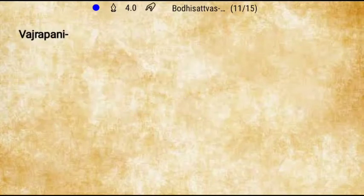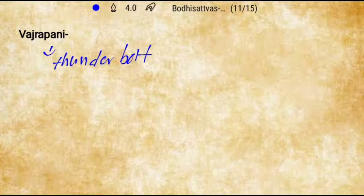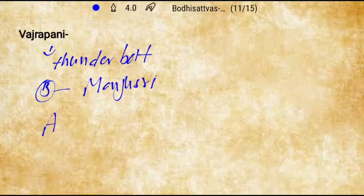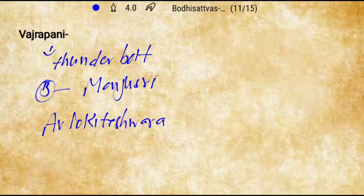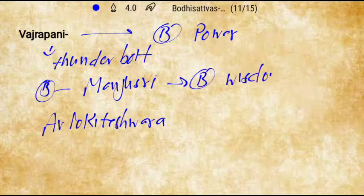Next is Vajrapani, meaning 'thunderbolt.' Vajrapani is depicted as one of the three protective deities around the Buddha. The three are: Vajrapani, who manifests the Buddha's power; Manjushri, who manifests the Buddha's wisdom; and Avalokiteshvara, who manifests the Buddha's compassion.